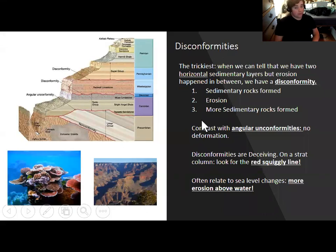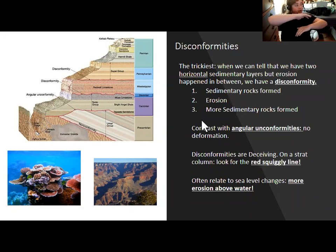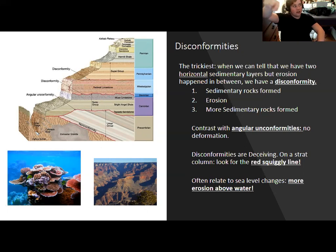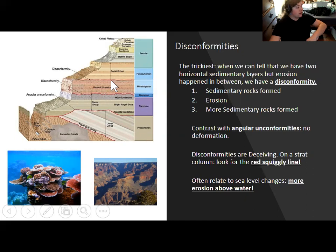A disconformity occurs when two horizontal sedimentary layers overlie each other but you can tell there's been erosion between them. The layers won't quite lie flat — they'll be jagged, indicating the lower rock was significantly eroded at one point before newer sediments were deposited on top. It's again hard to say exactly how much time is missing or exactly when erosion ceased and deposition began.